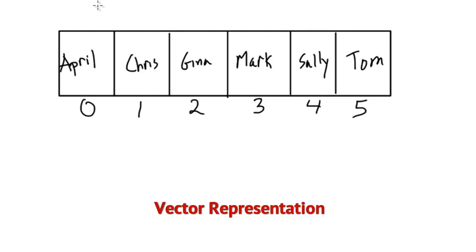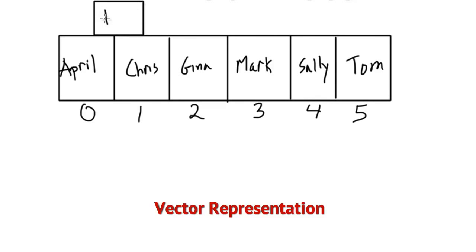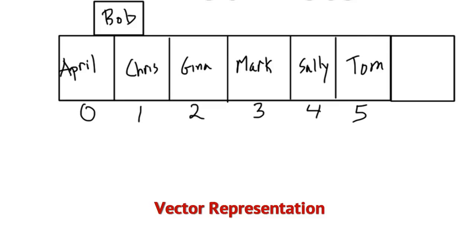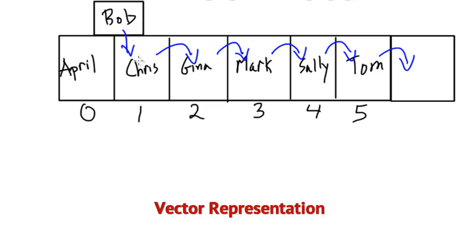So what happens when we have a friend we want to add — say Bob, who we just made friends with — and Bob should go in between April and Chris? In the case of the vector, we would have to first increase the size of our vector by one, and then shift all of the elements after April down by one: Tom, Sally, Mark, Gina, and then Chris, so we can fit Bob in. This may not seem like a lot of work for a computer to shift five contacts, but the more contacts we have, the more work we have to do. The amount of work grows in direct proportion to the number of contacts — the insertion operation grows linearly when using a vector because of this shifting.